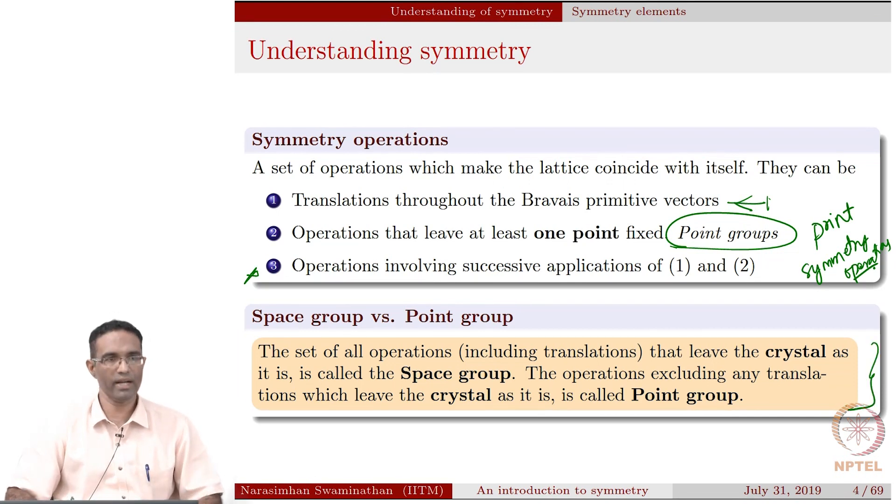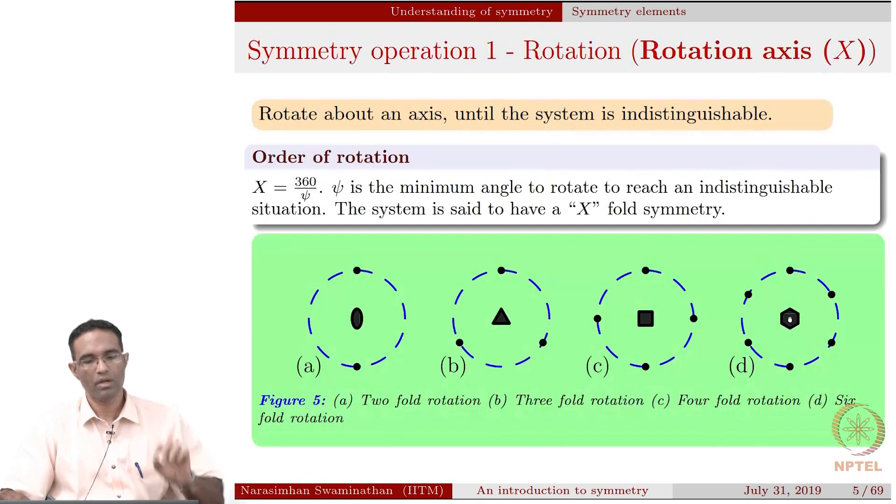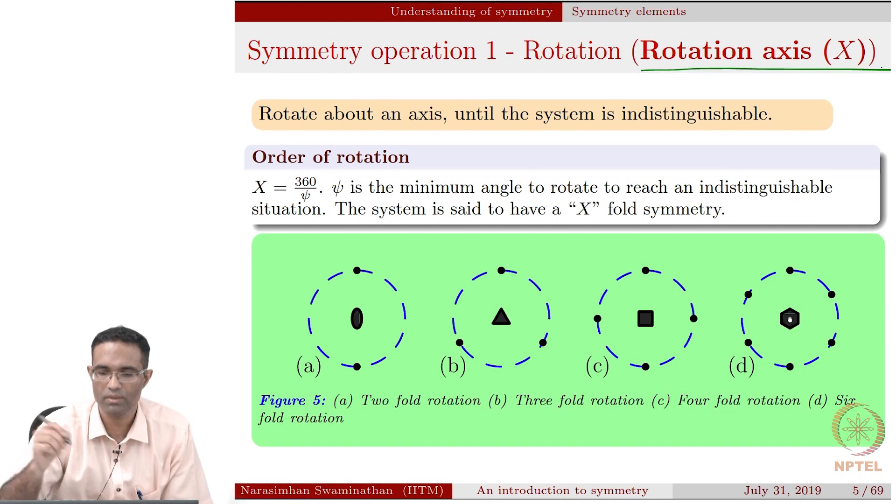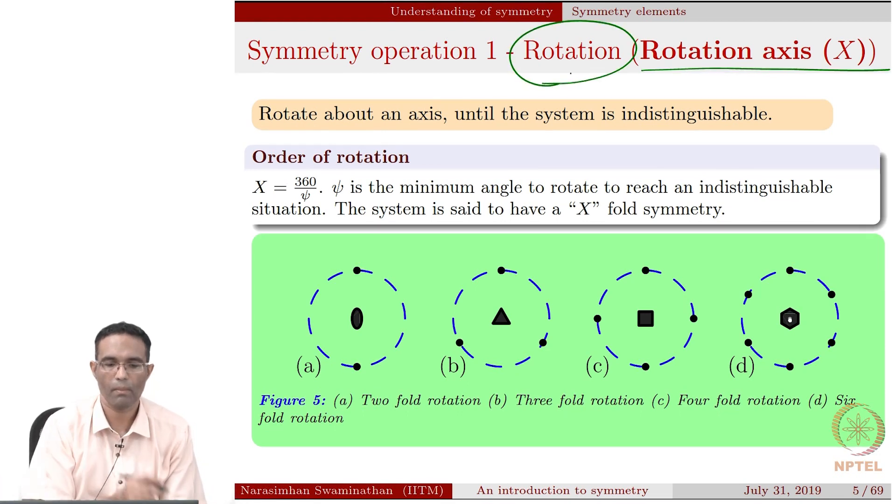We will look at these definitions a little bit later, when we actually have covered point groups and space groups. We will now talk about various symmetry elements that actually exist, that we can work with. The first one is called as the rotation, so rotate about an axis until the system is indistinguishable.